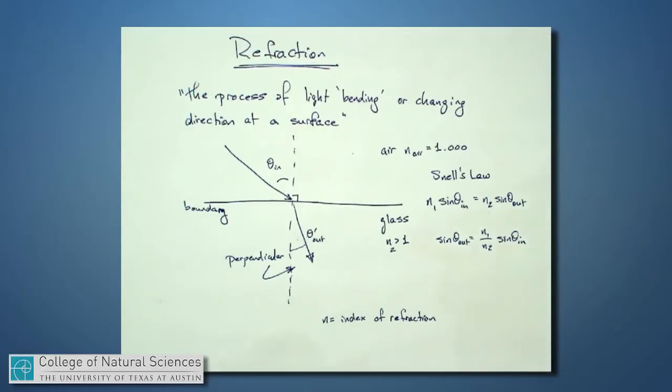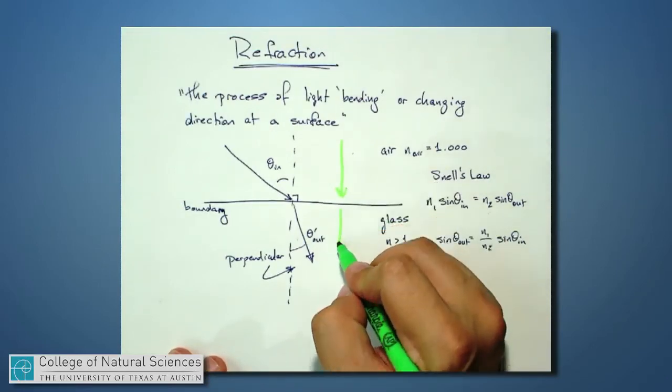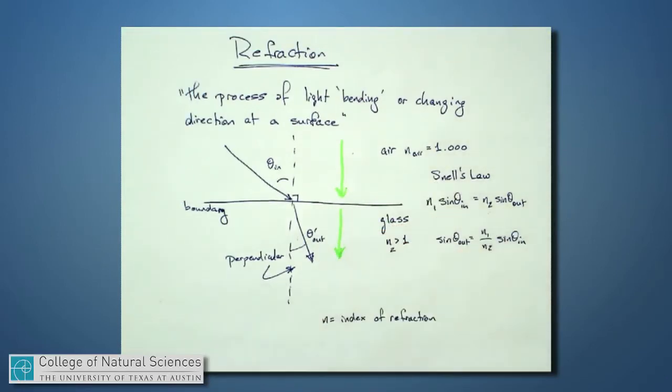So, on the other hand, if I send the light in straight in like so, it will be more or less unperturbed. Why is that? Because in this case, sine of theta in is zero.